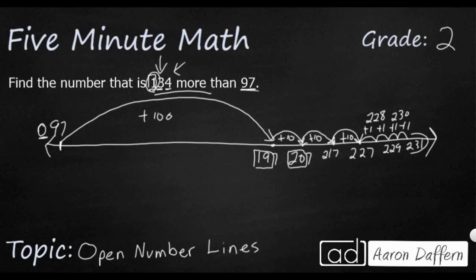So the number that is 134 more than 97 is 231.